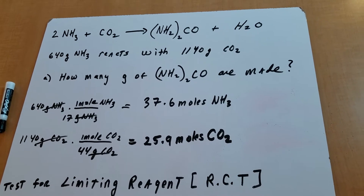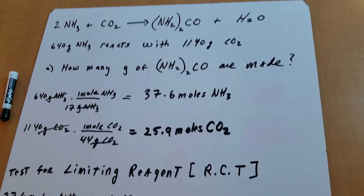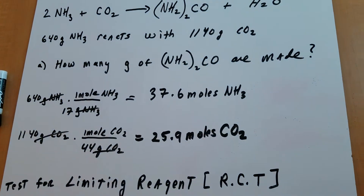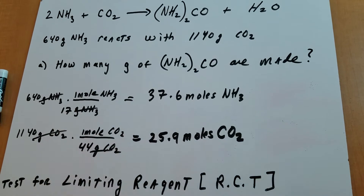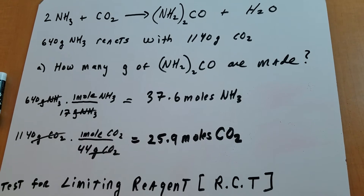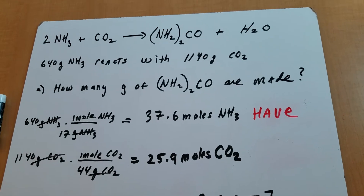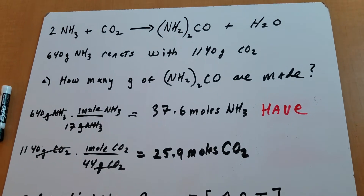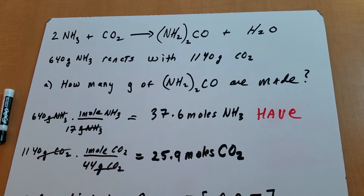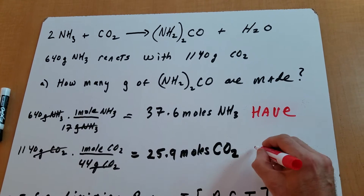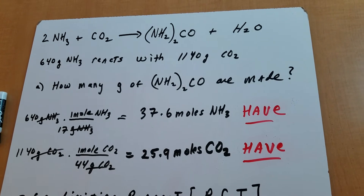A limiting reagent is simply the substance that controls the reaction because it runs out first, so we need to find it. The first move is to take the grams given and divide by the molecular weight to convert into moles, and write the word 'have.' In this example, we have 37.6 moles of NH3. Then take the 1140 grams of CO2, divide by its weight, convert to moles, and again write the word 'have.' It's very critical to write the word 'have.'